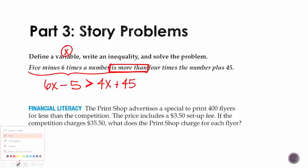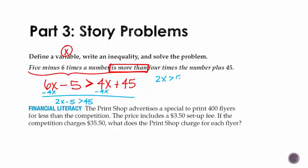And now if we solve this, we'll subtract 4x from both sides. So we get 2x - 5 is more than 45. If we add 45 to both sides, we get 2x is greater than 50. If we divide by 2, x has to be greater than 25.